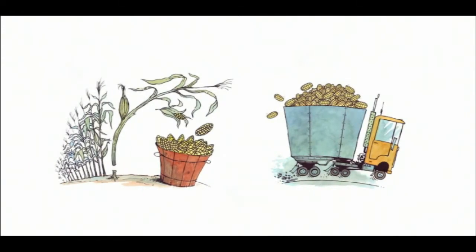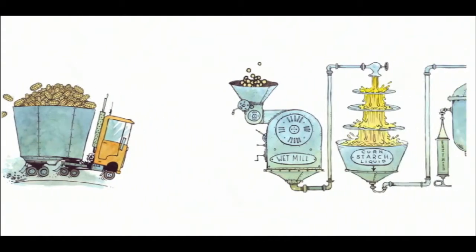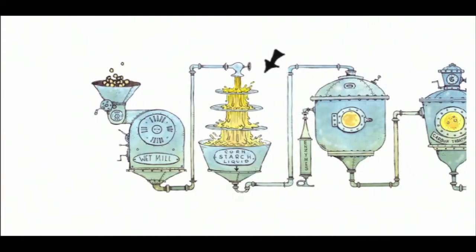To make high fructose corn syrup, the corn is first harvested and sent to the wet mill. Next, the corn is crushed in a mill and then run through screens in order to separate the corn starch from the other parts of the kernel.